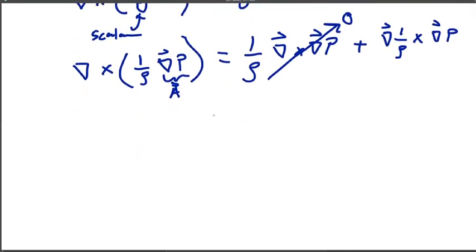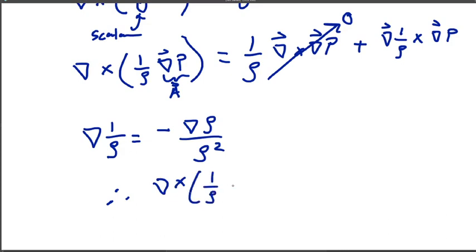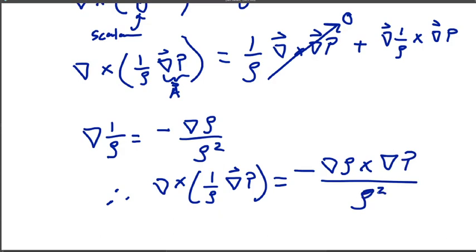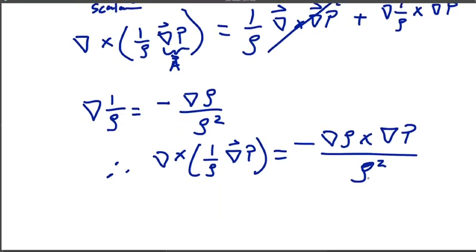All right. What is the gradient of one over rho crossed with grad of p? Well, first of all, the gradient of one over rho. This is the minus grad rho divided by rho squared. So therefore we have grad cross one over rho grad p. That looks like minus grad rho cross grad p divided by rho squared. All right. So let's rewrite these terms here. Let's rewrite our Euler momentum equation with all of these.